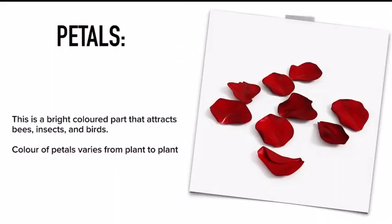First we have petals — this is the bright colored part that attracts bees, insects, and birds. When you look at a flower, petals are the most distinctive part you notice. They are very brightly colored, and the colors of petals vary from plant to plant. Flowers look different from each other mainly because of the colors and shapes of their petals.